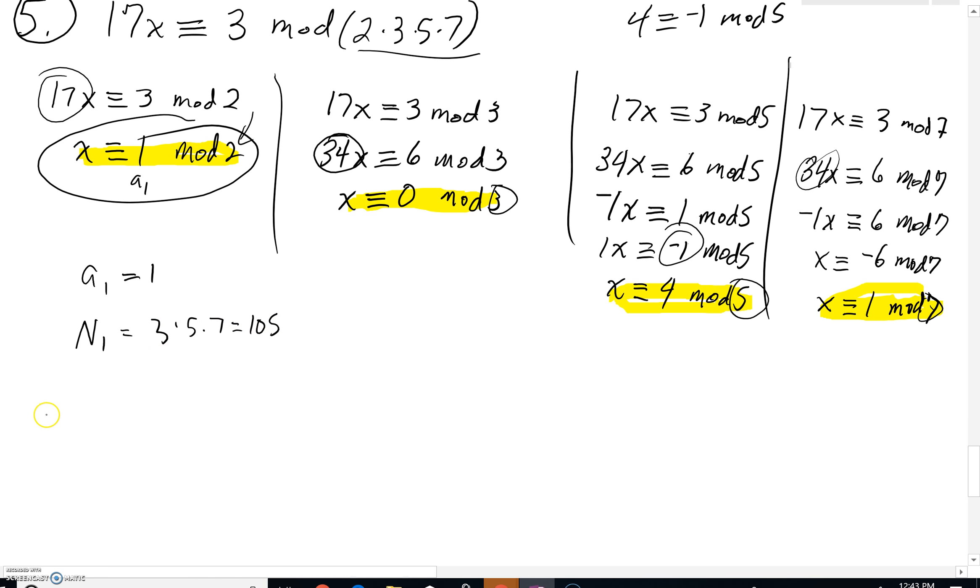Then we're going to set up an equation. n sub 1 times x sub 1 is congruent to 1 mod 2. So we've got 105 x sub 1 is congruent to 1 mod 2.